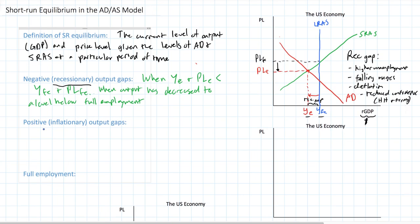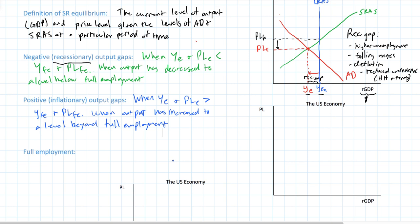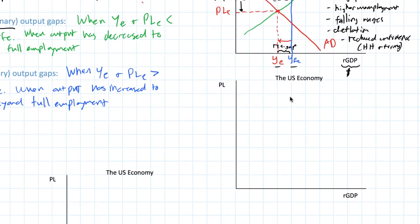A country's short-run equilibrium level of output can also take place at a level beyond full employment — this is called a positive output gap. A positive or inflationary output gap occurs when the equilibrium level of output (YE) and the equilibrium price level (PE) are greater than full employment output and the full employment price level. This is only possible in the short run because in the long run, wages will fully adjust and output will return to its full employment level.